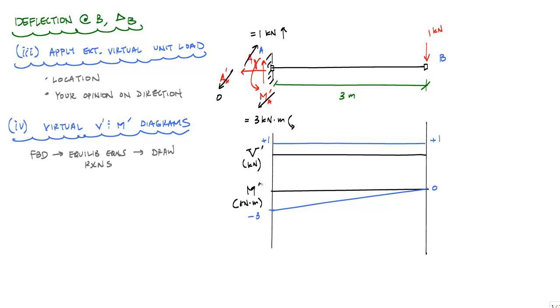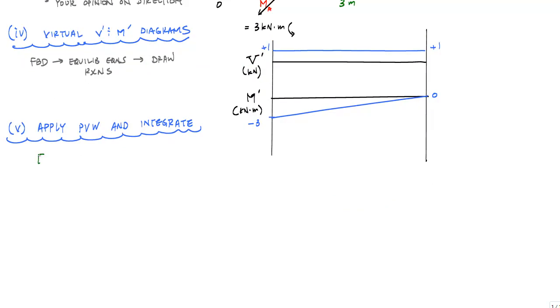Now all I have to do is apply the principle of virtual work and integrate. That premise is saying that the external virtual work is equal to the internal virtual work. Because we're looking for displacement and we applied a unit force, our external virtual work is 1 kilonewton times the displacement at B. My integral, which I'm going to evaluate over the entire length of the beam, 0 to L, is this internal virtual moment times the real curvature, dx.